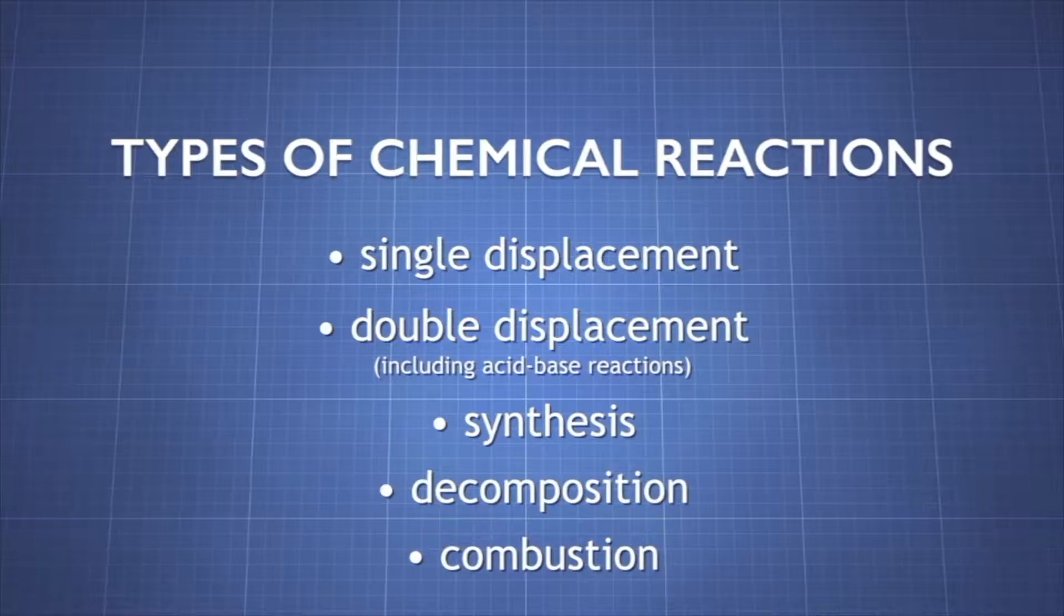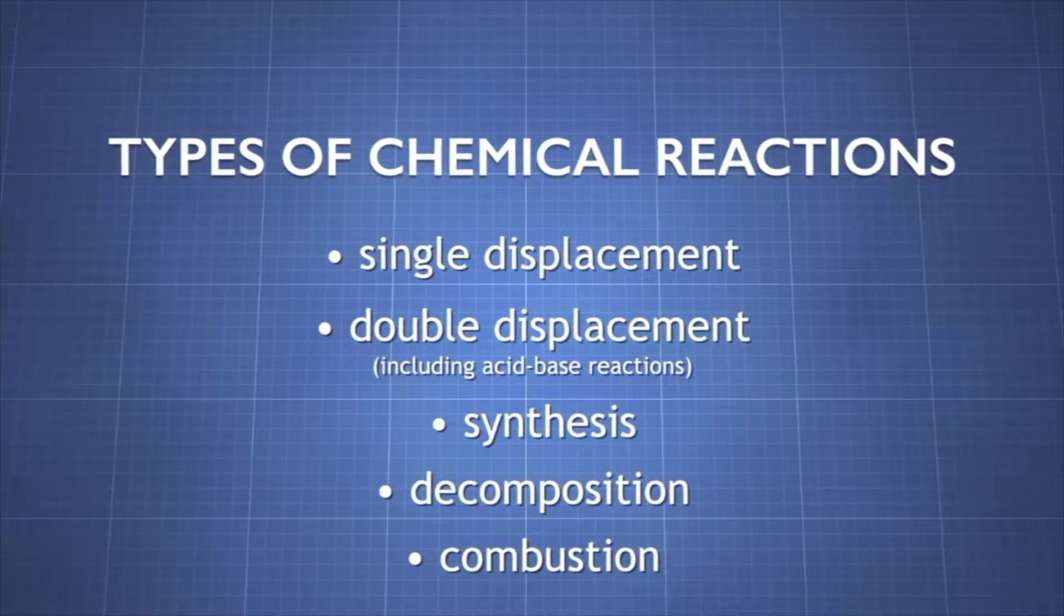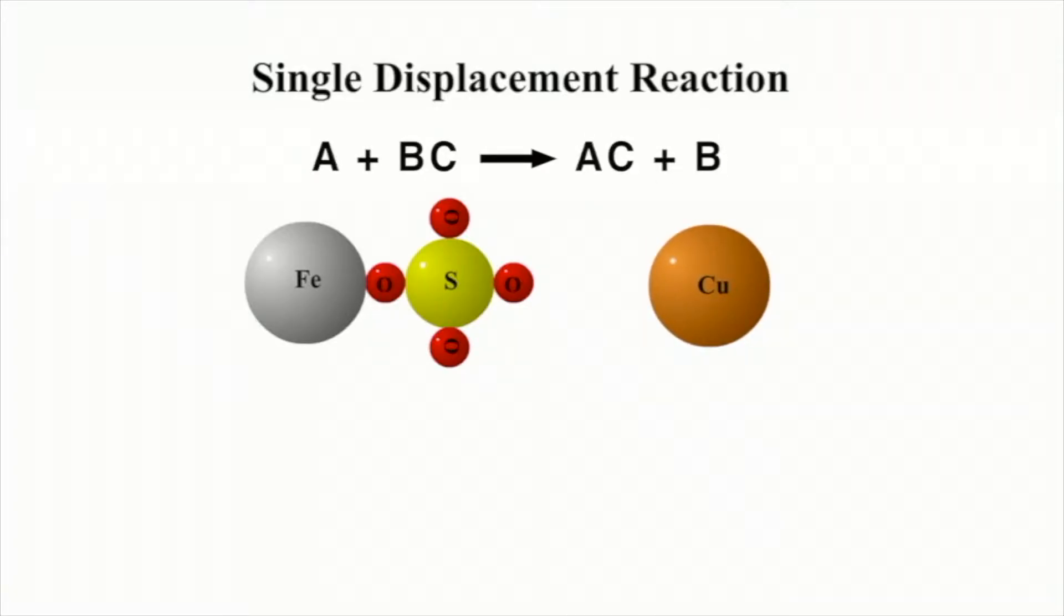What are the signs of these chemical reactions? First, a single displacement reaction occurs when one element exchanges with another element in a compound. The general form of a single displacement reaction is A plus BC goes to AC plus B. A has changed place with B.